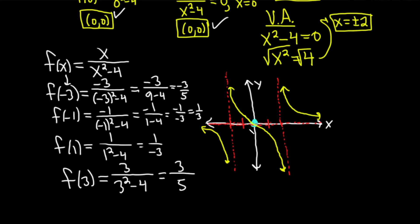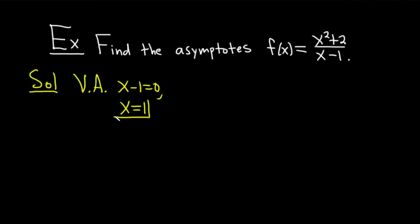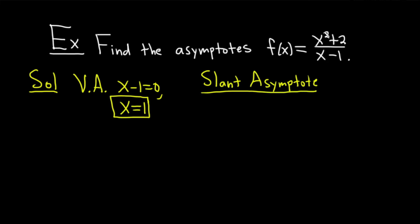Let's go over more knowledge of asymptotes. Our example is to find the asymptotes of f of x equals x squared plus 2 all over x minus 1. Let's start with the vertical asymptote. You simplify first if possible — nothing cancels. Then set the bottom equal to 0: x minus 1 equals 0, giving x equals 1 as our vertical asymptote. As for horizontal asymptotes, this function doesn't have any.